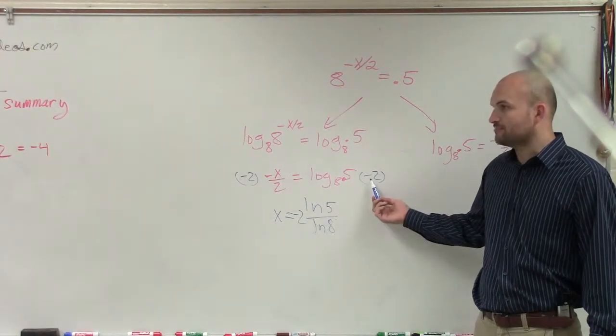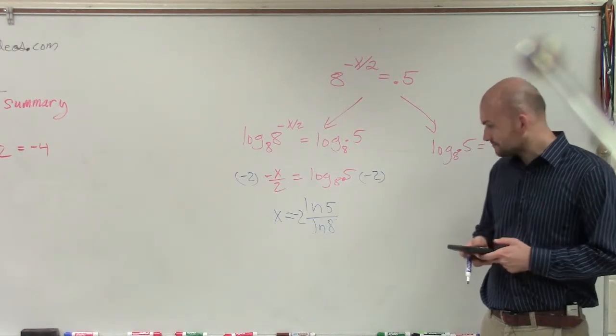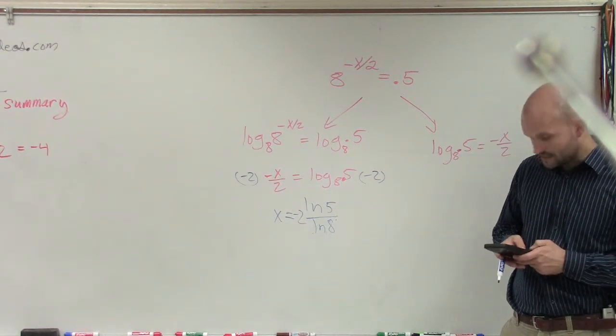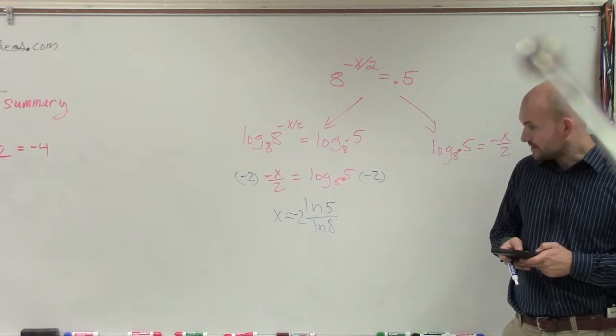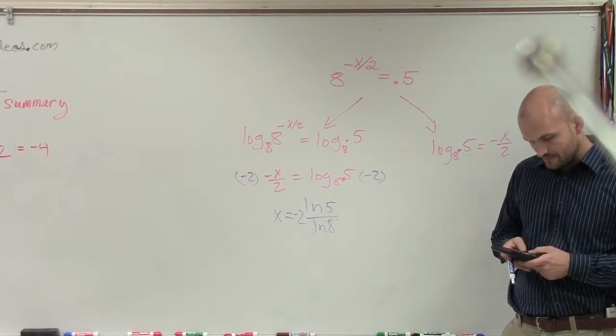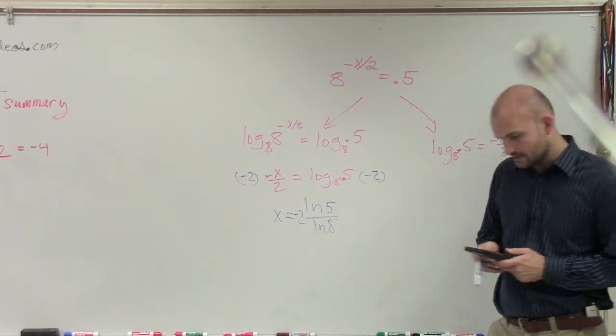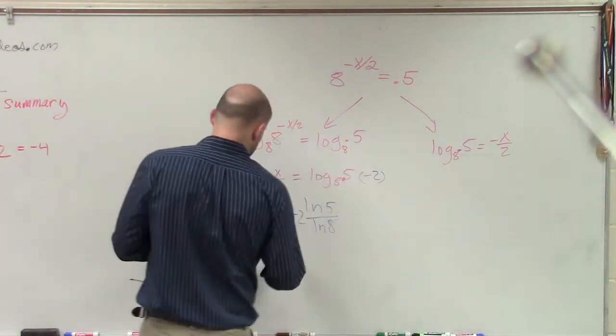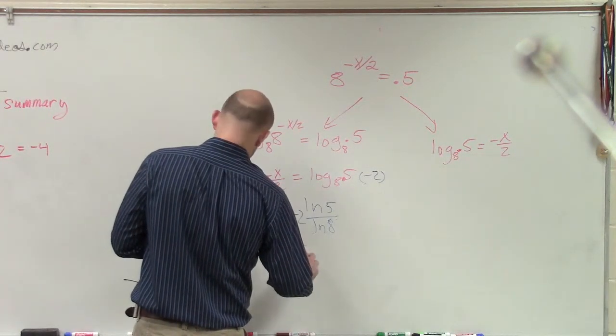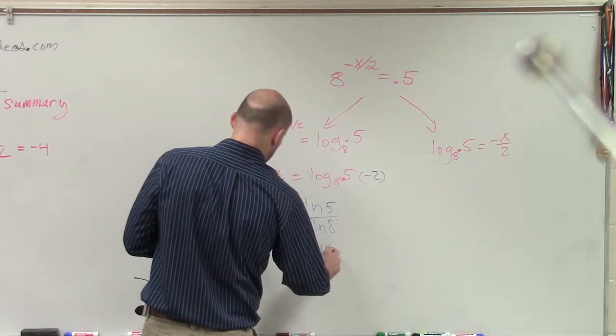And then remember, it's being multiplied by negative 2. So what I'll do is I'll just do ln of 5, then divide it by ln of 8, and then multiply that by negative 2. And therefore, x is approximately negative 1.55.